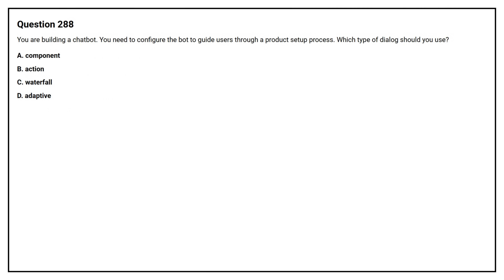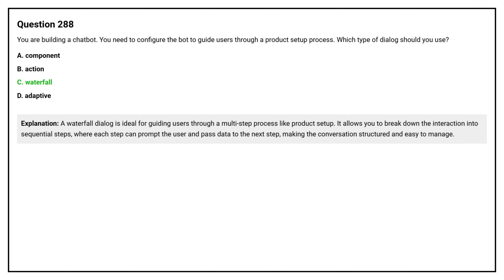Question number 288. You are building a chatbot. You need to configure the bot to guide users through a product setup process. Which type of dialogue should you use? Option A: Component. Option B: Action. Option C: Waterfall. Option D: Adaptive. The correct answer is Option C: Waterfall. Waterfall dialogue is ideal for guiding users through a multi-step setup process like product setup. It allows you to break down the interaction into sequential steps, where each step can prompt the user and pass data to the next step, making the conversation structured and easy to manage.